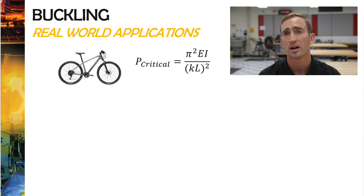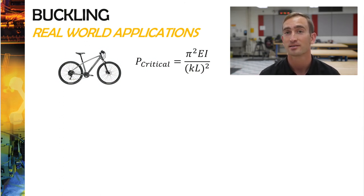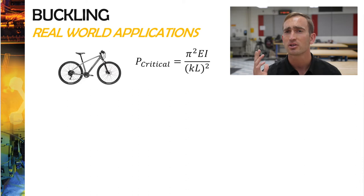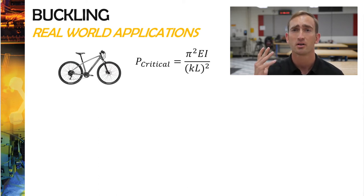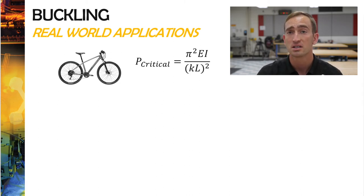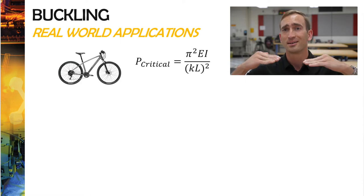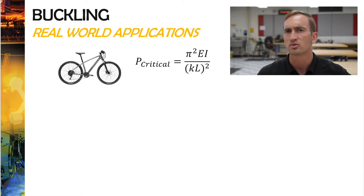Let's look at an example where you design a bike. As I was riding my bike, I realized that everything we're learning about moment of inertia, center of mass, and especially buckling is very applicable to the design of a bike. When you're designing a bike frame, not only do you want it to look cool, but you want to make sure it will sustain all of the forces it's subjected to. The buckling equation is very important because we want to make sure the frame itself isn't going to bend or buckle under the weight of its rider.